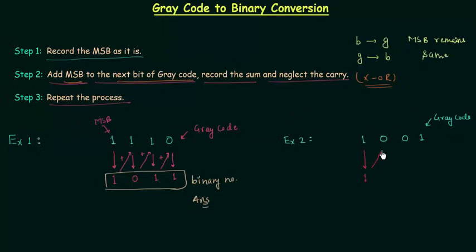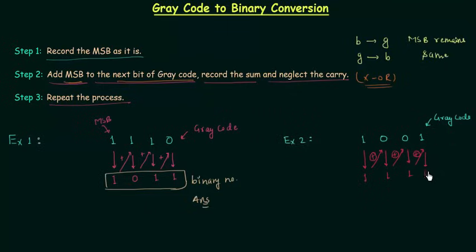Then we perform the XOR operation between the MSB and the next bit. MSB is 1 and the next bit is 0: one XOR zero gives us 1, because XOR is an odd-ones detector. Repeating the process: one XOR zero gives us 1, and one XOR one gives us 0 because we have an even number of ones. So in example number two the binary number is 1110.